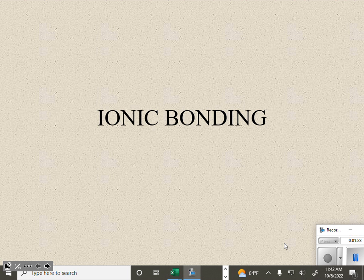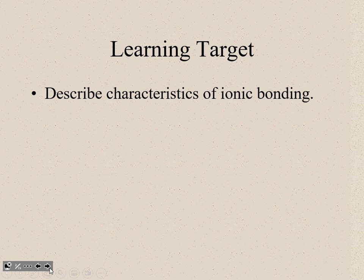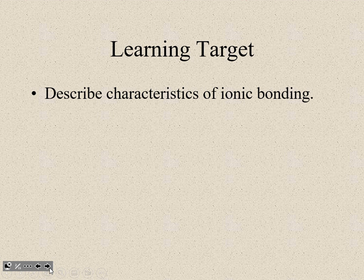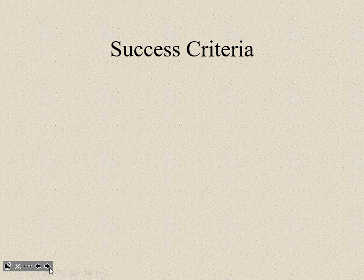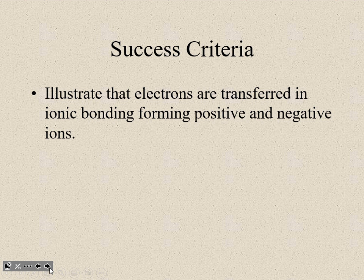When I look at this, my learning target is to describe characteristics of ionic bonding. The success criteria that I'm going to need to be able to describe those characteristics, I'm going to need to be able to illustrate that electrons are transferred in ionic bonding forming positive and negative ions. Remember, we talked about cations and anions. We even drew some dot notations of cations and anions. We have the transfer of electrons causing these electrostatic, these pluses and minuses. The pluses and minuses that form the bonds.